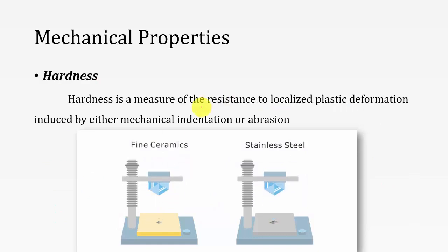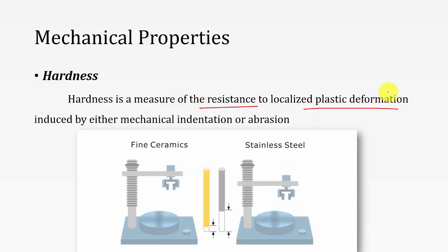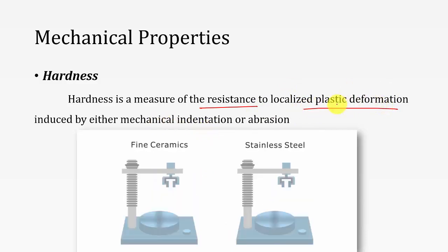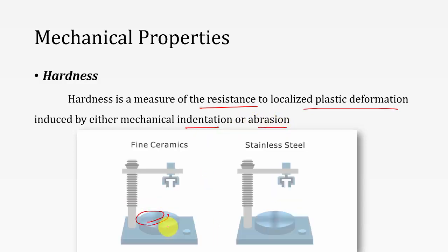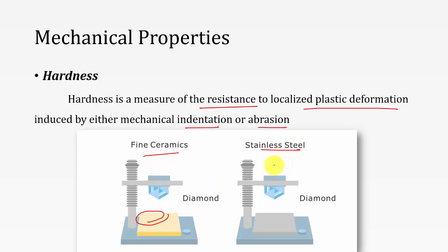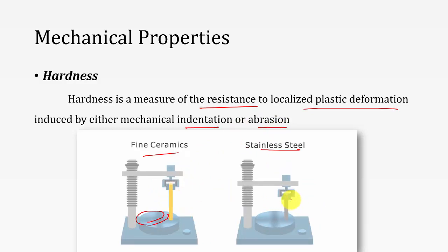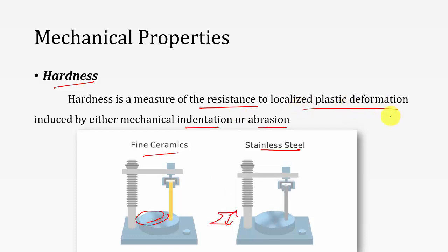Hardness is the measure of resistance to localized plastic deformation — the ability of the material to resist localized plastic deformation. Plastic deformation may occur due to mechanical indentation or abrasion. In mechanical indentation, a diamond die is pressed: ceramics show a small indentation while stainless steel shows a high indentation. In abrasion, stainless steel undergoes high abrasion. Hardness is the ability of the material to resist localized plastic deformation.